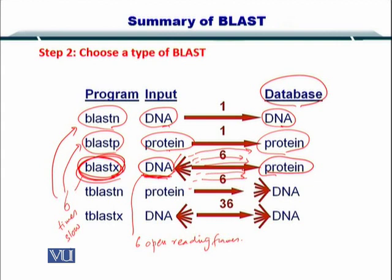If you want to use TBLASTN or TBLASTX, the number of comparisons again for TBLASTX is six ORFs on the query side and six ORFs on the database side — six times six — that is equal to 36. So 36 comparisons are made for one TBLASTX.